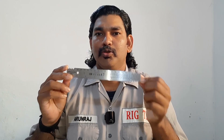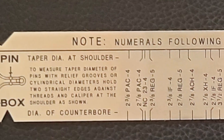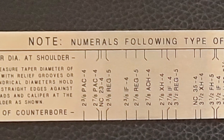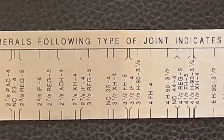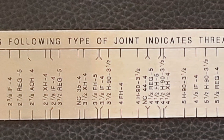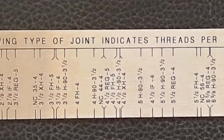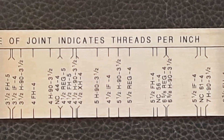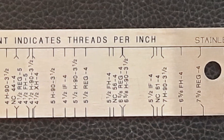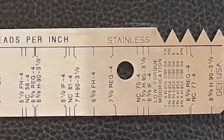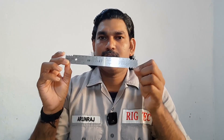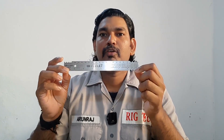This is the tool joint identifier. The main purpose is to identify the API rotary shoulder connections. This tool joint identifier has a lot of features.